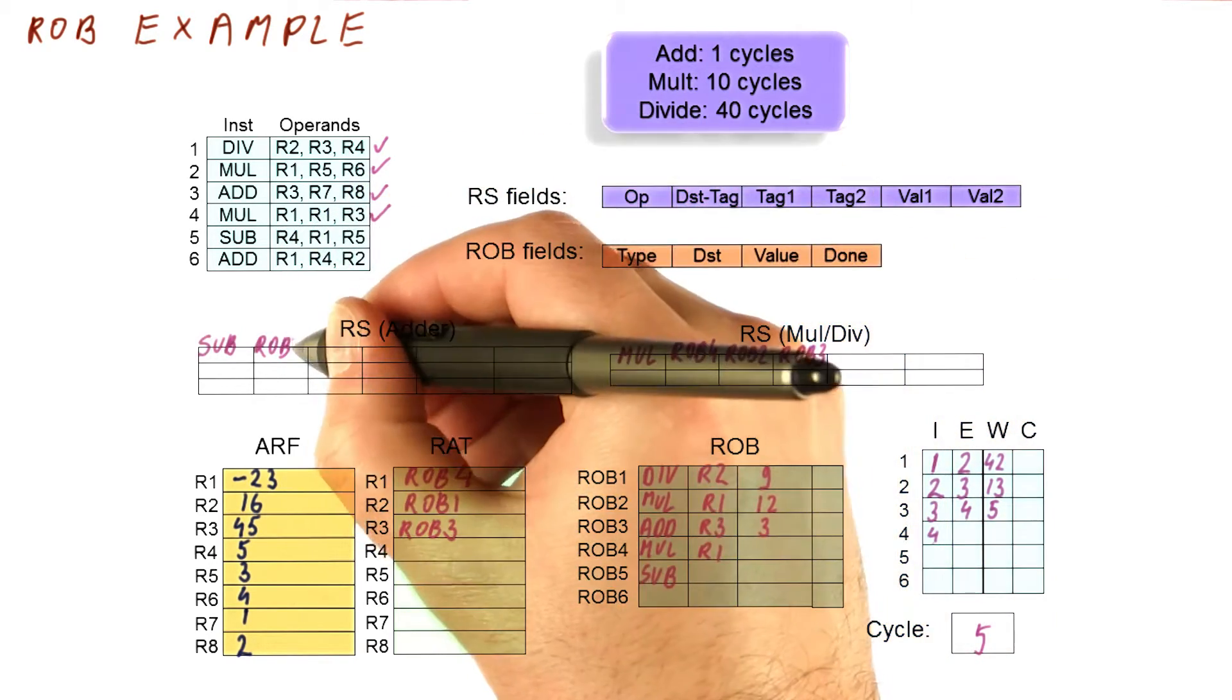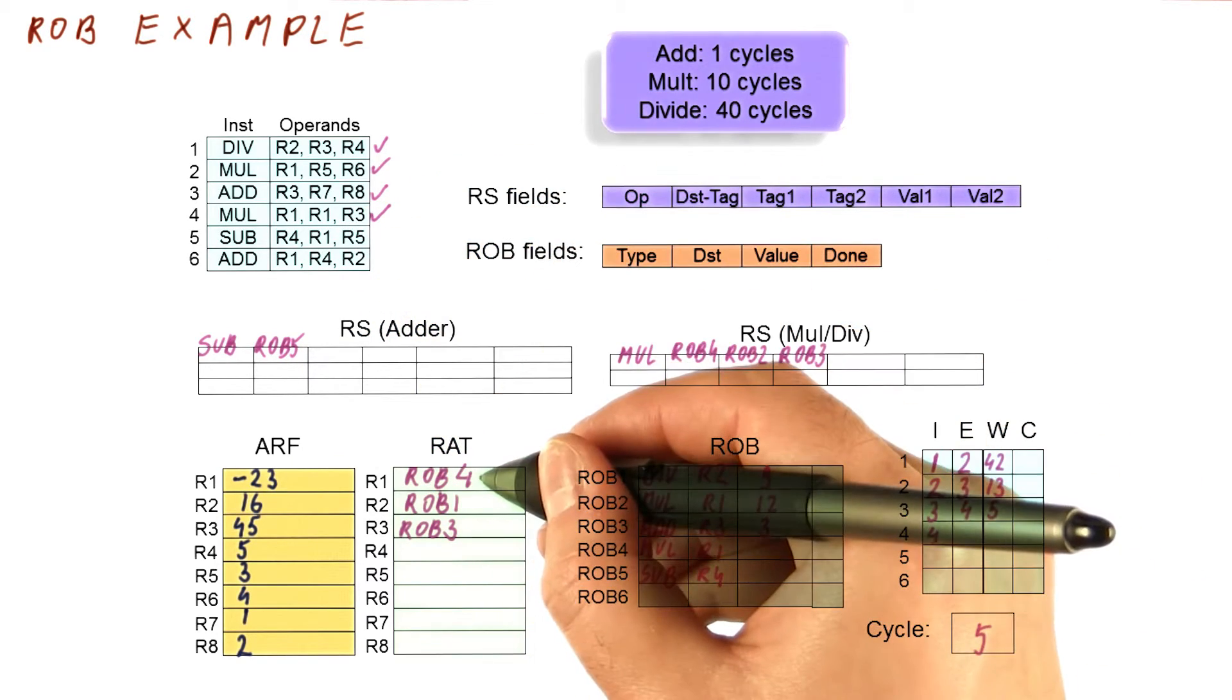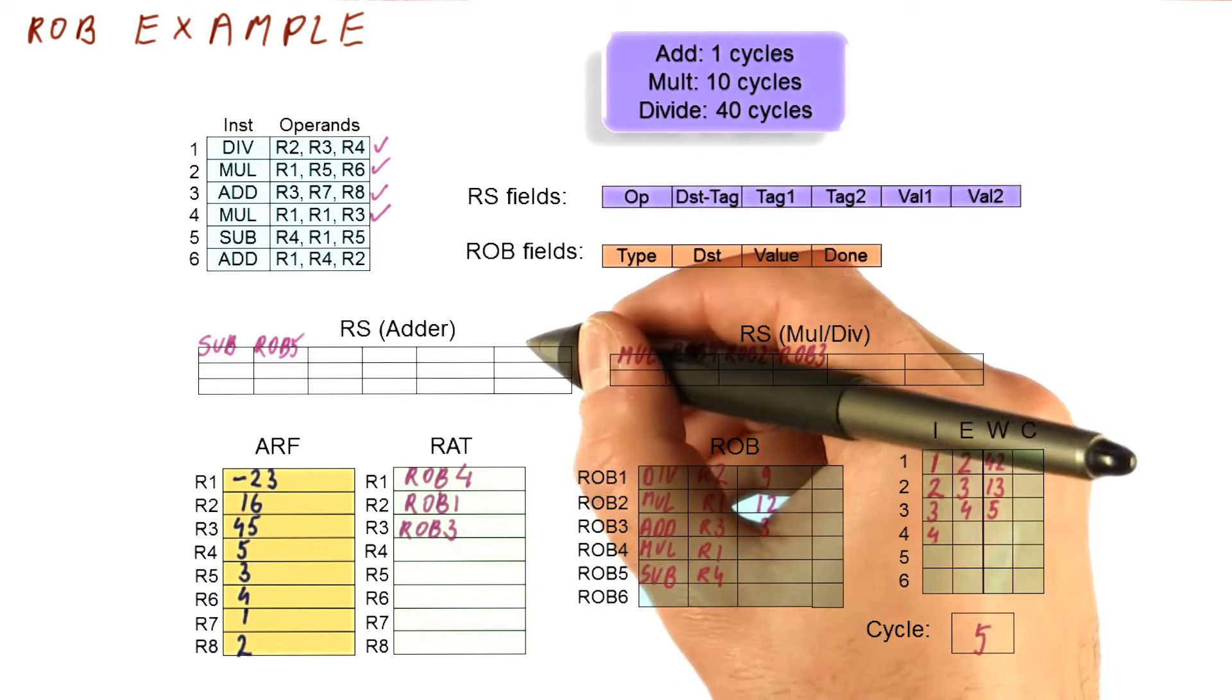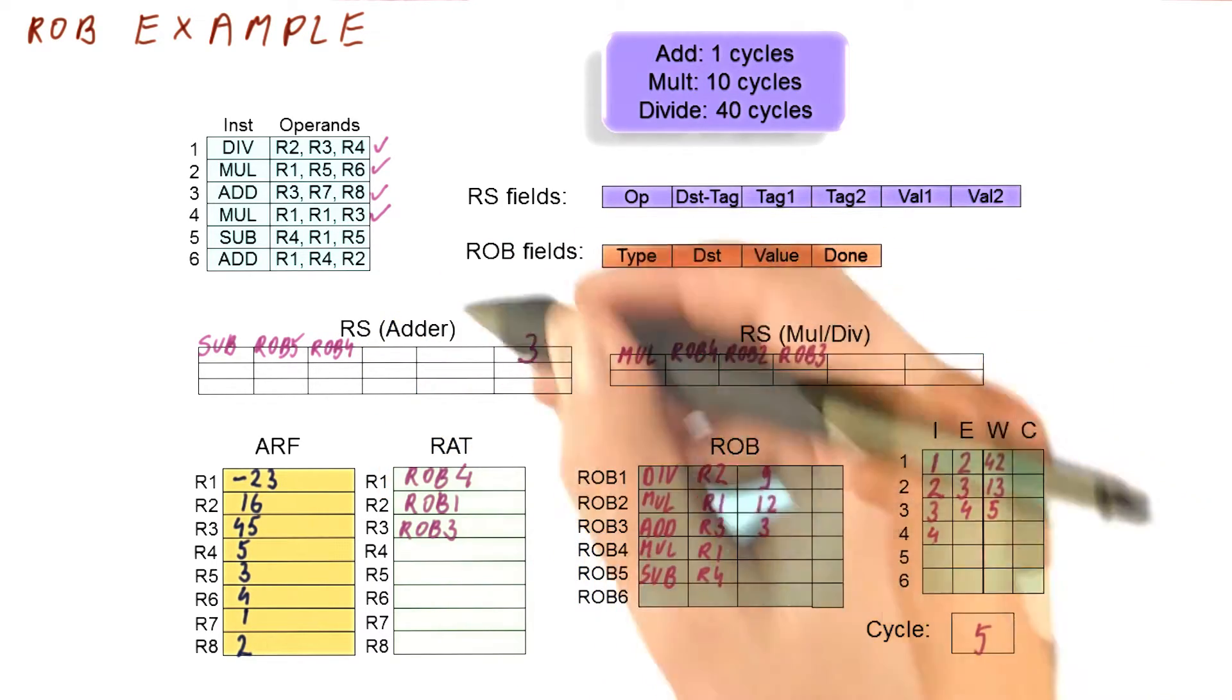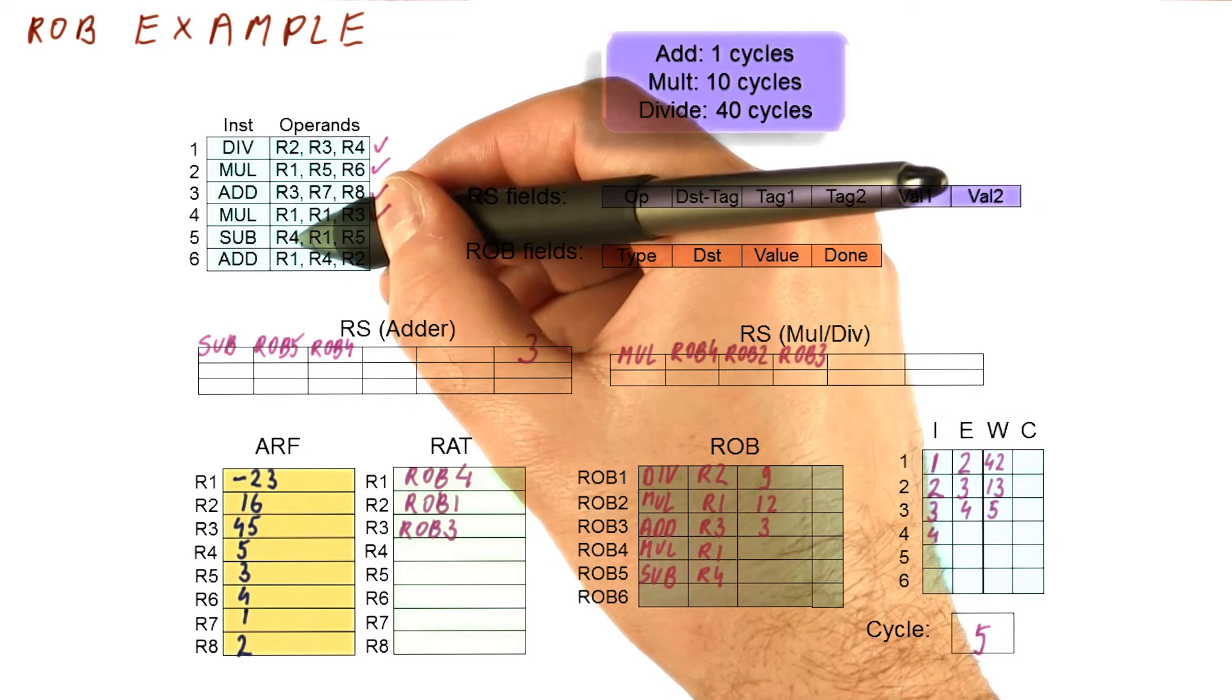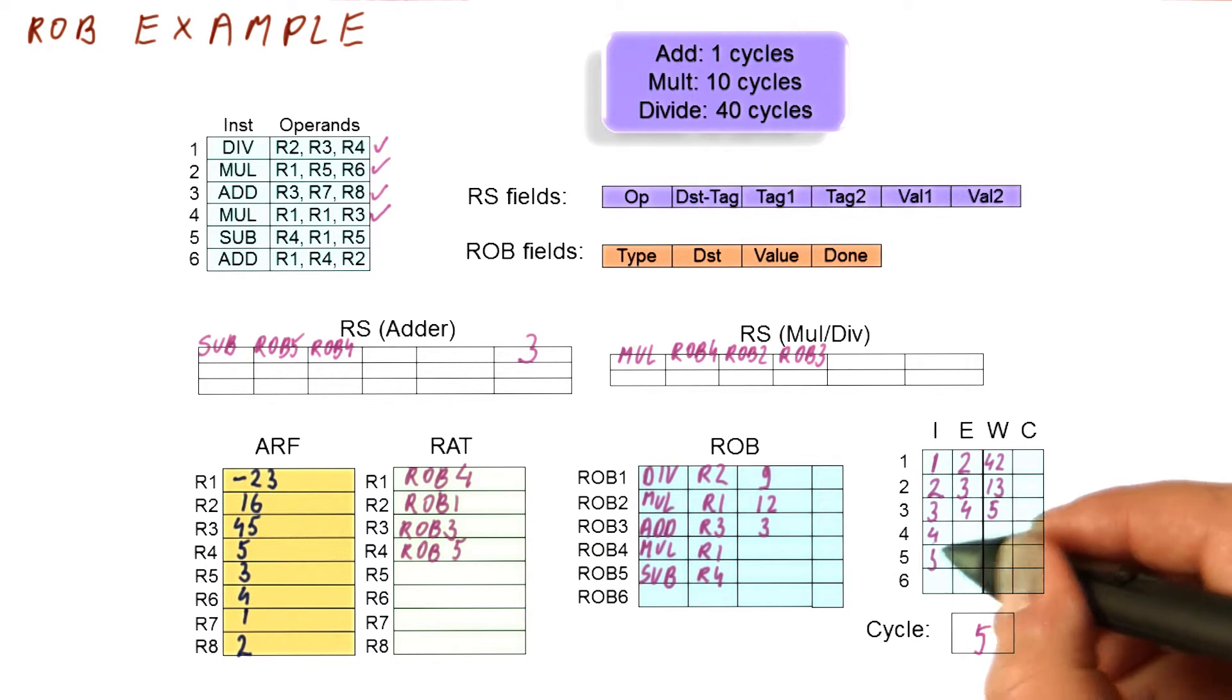This is a subtract in ROB5, writing to R4. R1 and R5 are ROB4 and 3. So I write the value of 3 here and ROB4 here. And then what I do is I mark that register 4 is from now on going to be pointing to ROB5 because that's where I put this instruction.